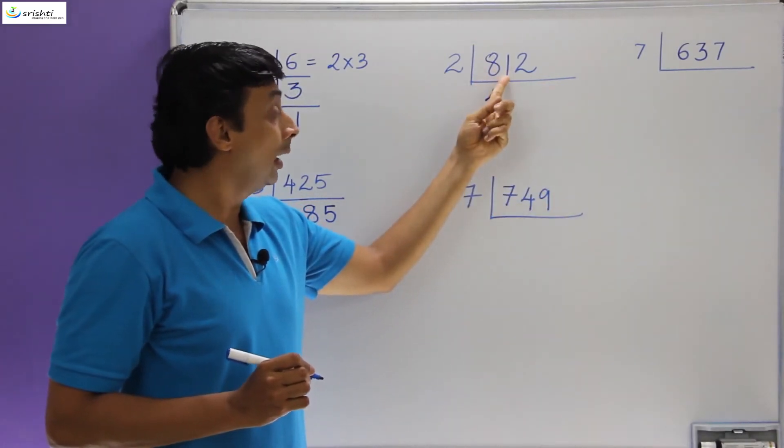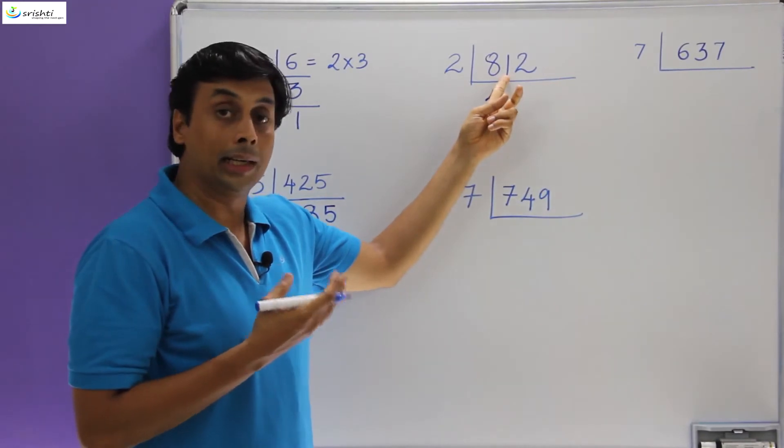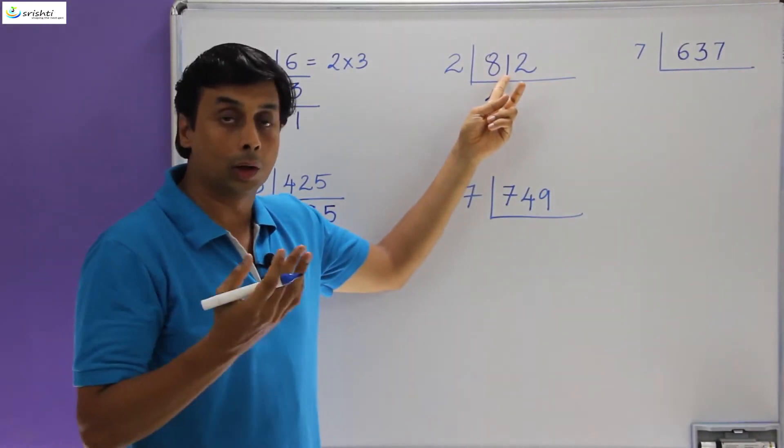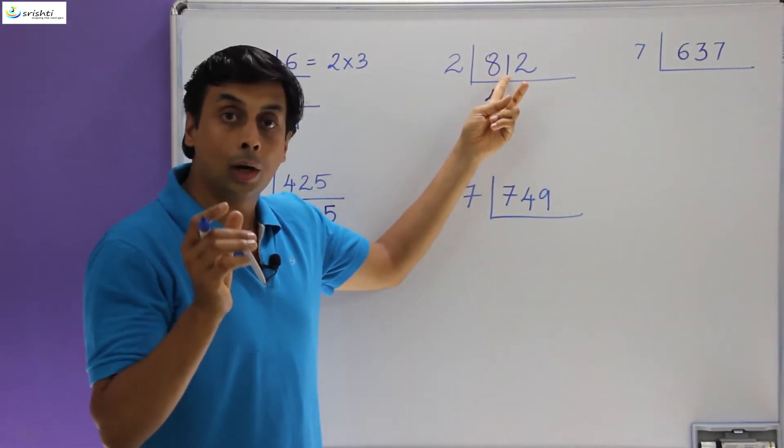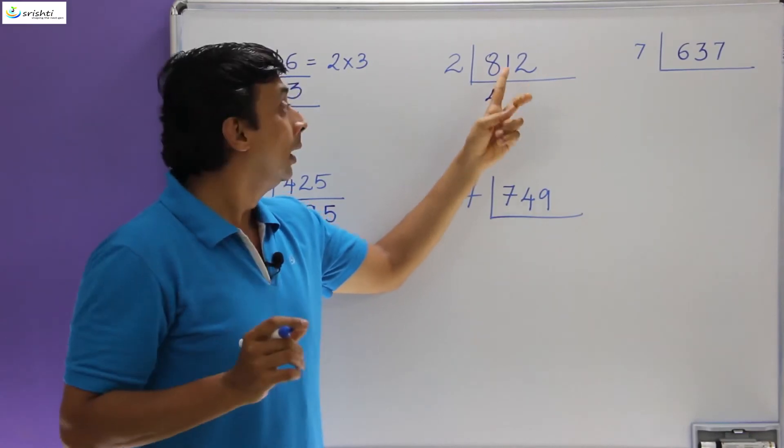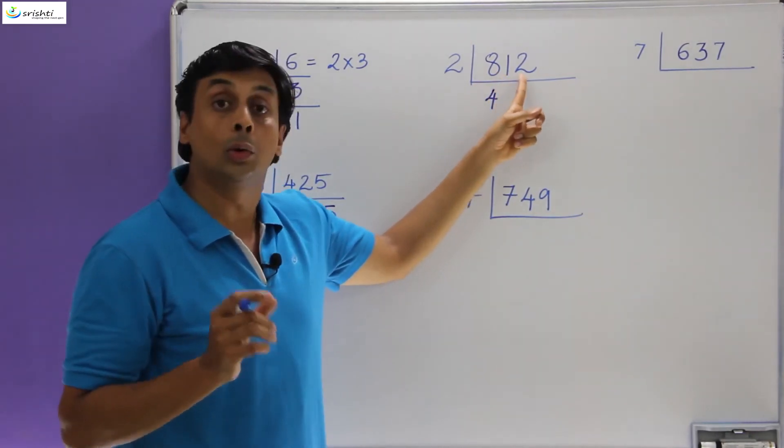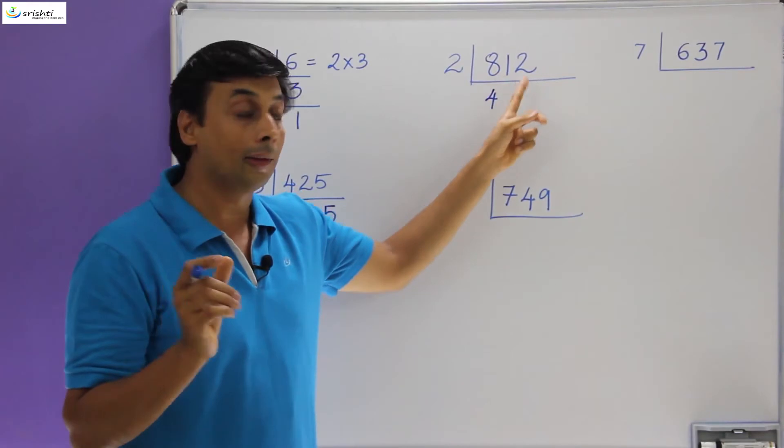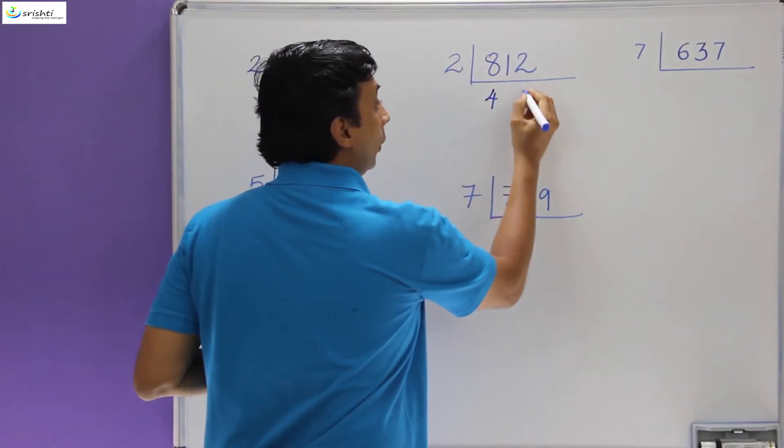They see a 1, and they are right that 1 cannot be divided by 2 because 1 is less than 2. So what they tend to do here is they tend to take 1 and 2 together, that is 12, and 12 divided by 2 is 6.